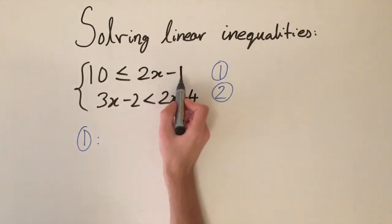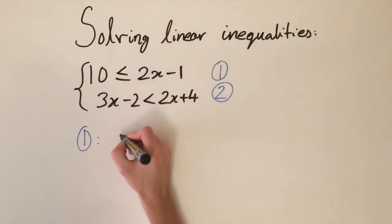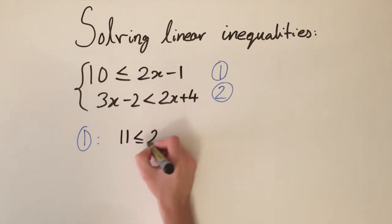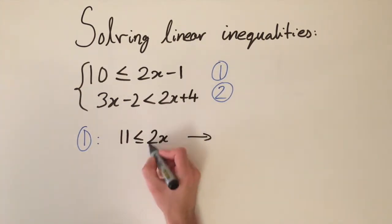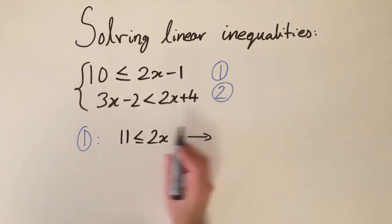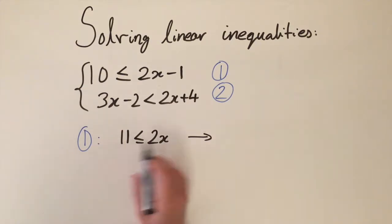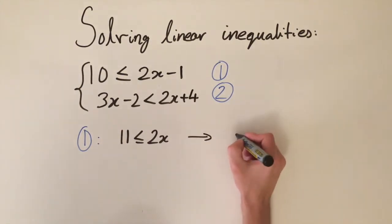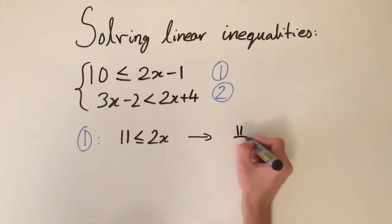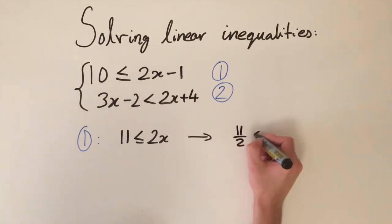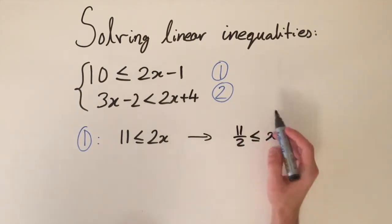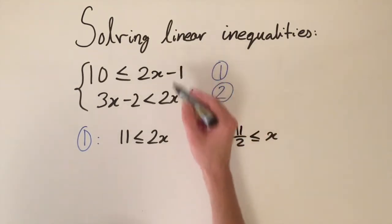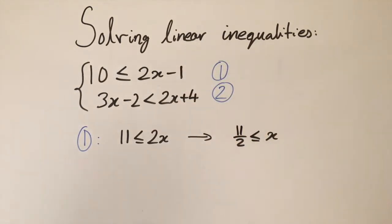Solving inequality 1: we add 1 to both sides to get 11 is less than or equal to 2x, then divide by 2 — which is positive so no sign change needed — giving 11 over 2 is less than or equal to x. This is our first condition.